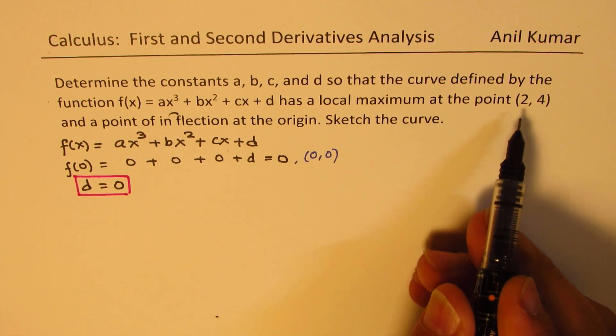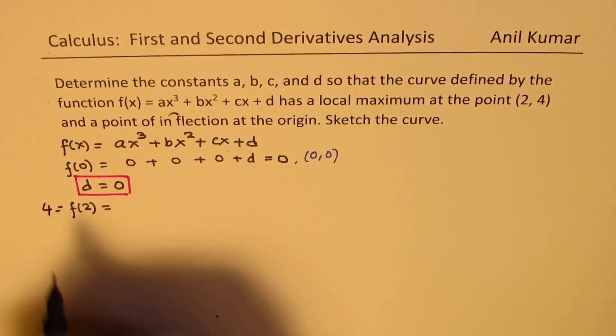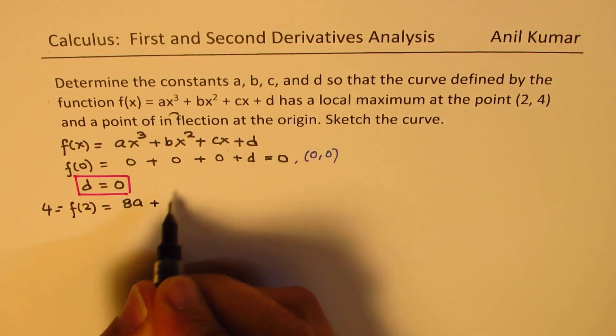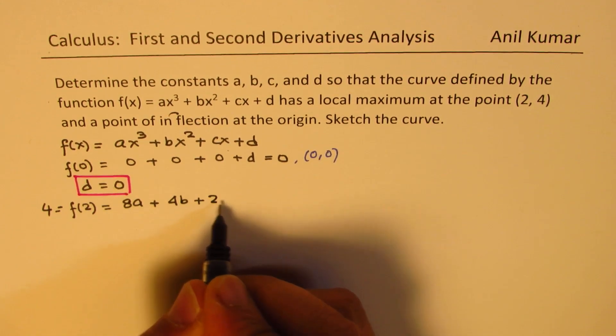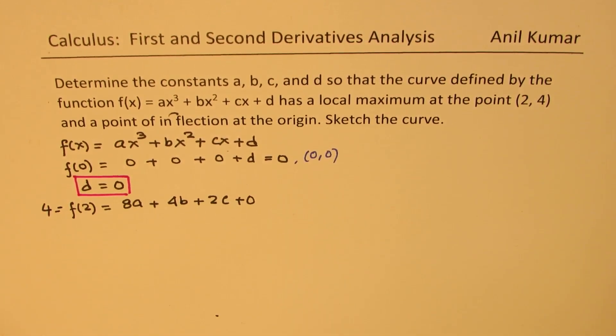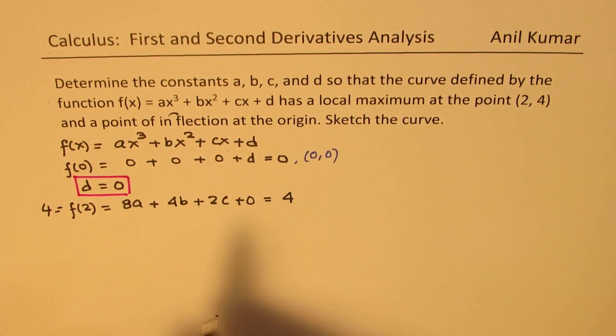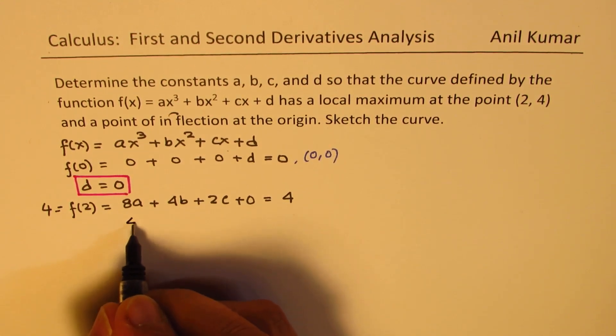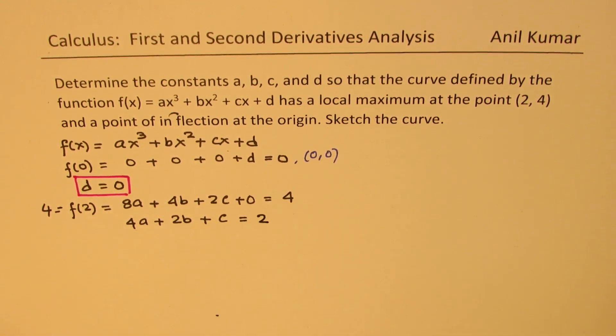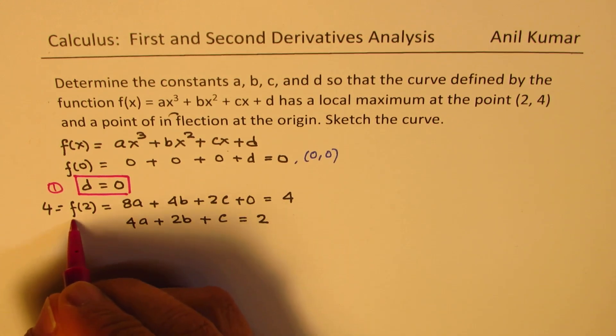Now, let us take 2 and 4. So at f(2), the value of the function is 4. When we substitute 2 here, we get 2³ is 8. So 8a plus 2² is 4, 4b, plus 2c plus 0. So I am placing here 0 for d. We get this equation as equal to 4. Now, we could actually simplify this, dividing all by 2, we get 4a + 2b + c = 2. So we get an equation. Let's call this as equation 1, and this one as equation 2.